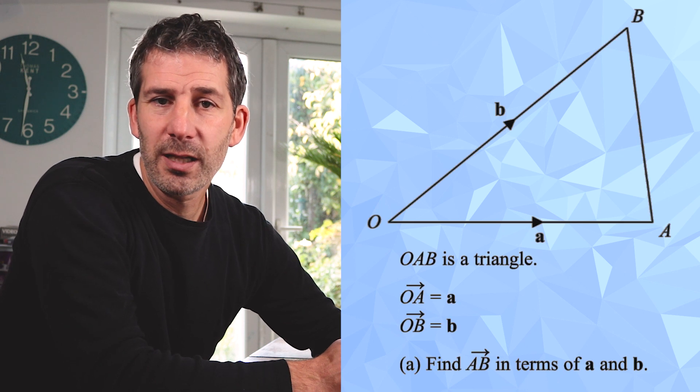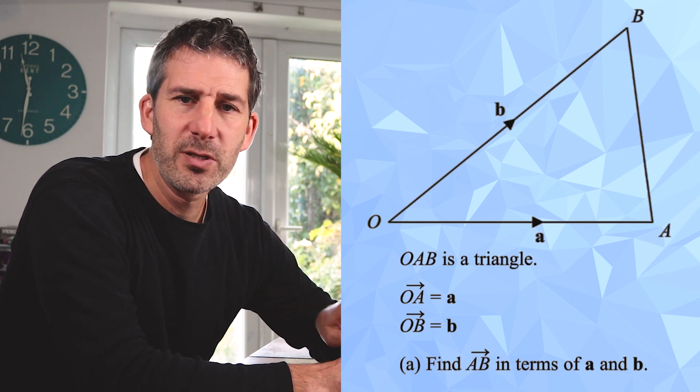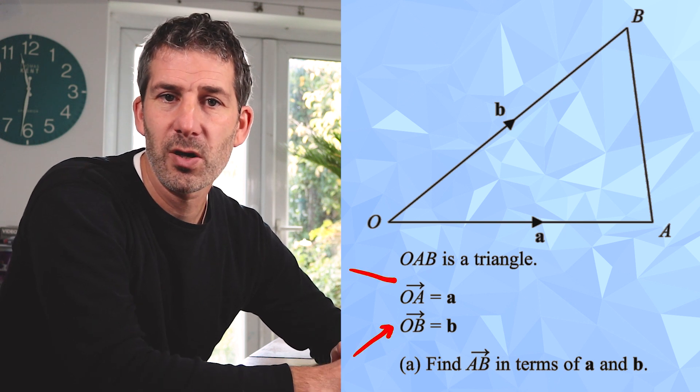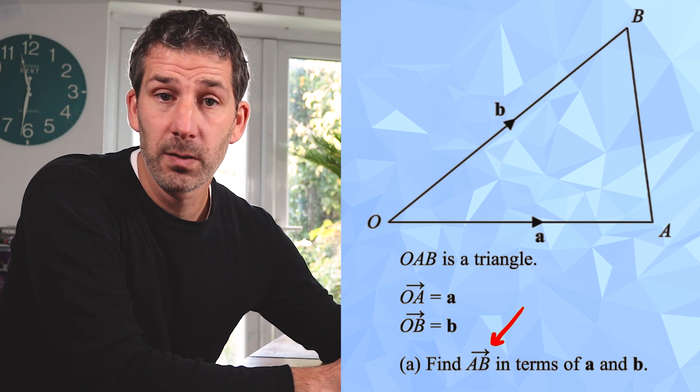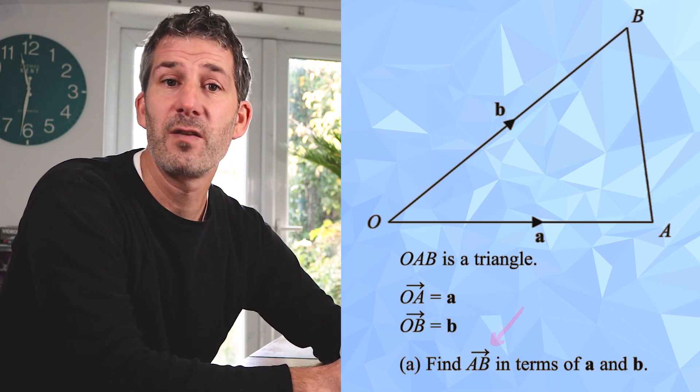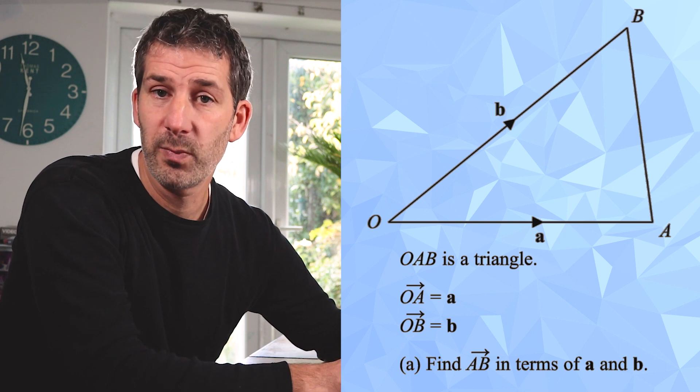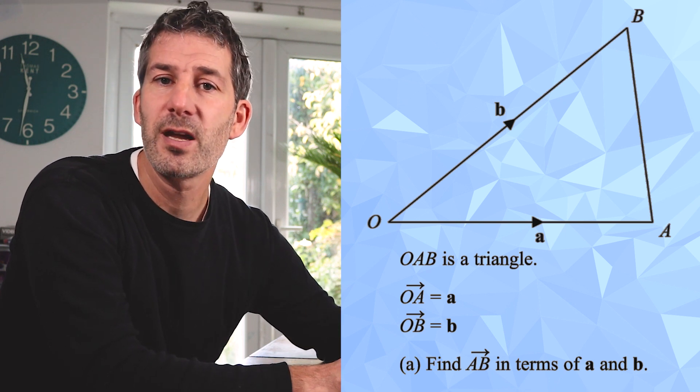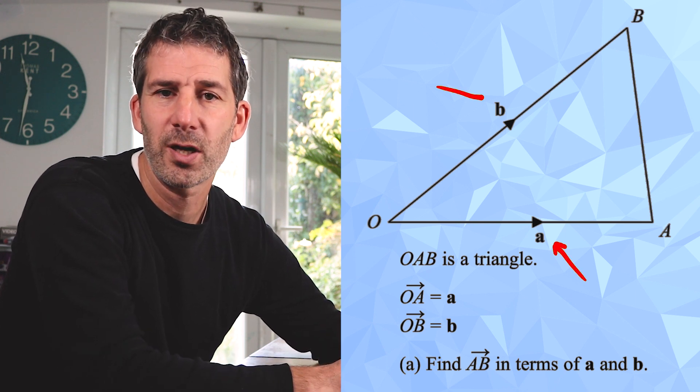Right then, this is what the beginning of a typical exam question might look like. When you see those capital letters with the arrow over the top, that means the vector from A to B. So in this case you're being asked to find the vector that goes from A to B in terms of a and b, and the 'in terms of a and b' is referring to that little a and little b written next to the triangle.